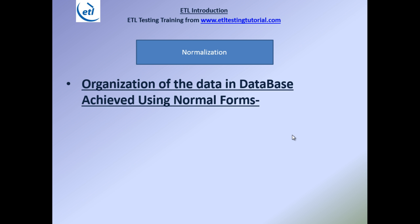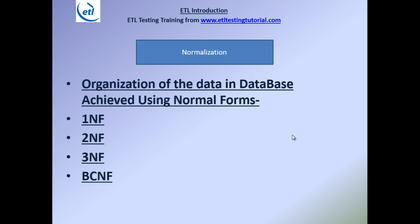The organization of data into a database is achieved using normal forms. The whole concept is called normalization. Under normalization we have some rules — if you follow these rules, your data is organized. Those rules are called normal forms: First Normal Form (1NF), Second Normal Form (2NF), Third Normal Form (3NF), and Boyce-Codd Normal Form (BCNF). Follow these simple rules and your data will be organized and called a normalized database.